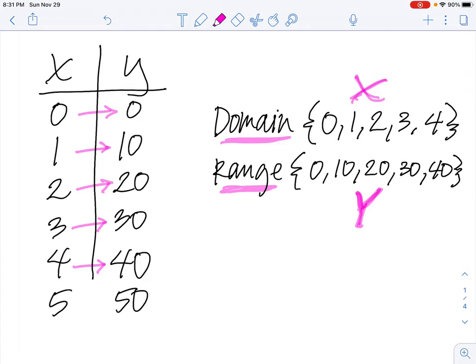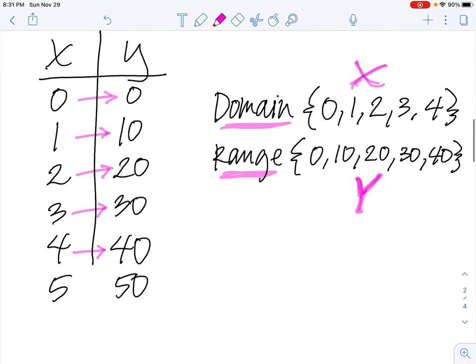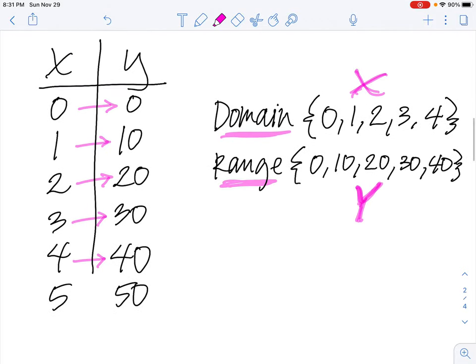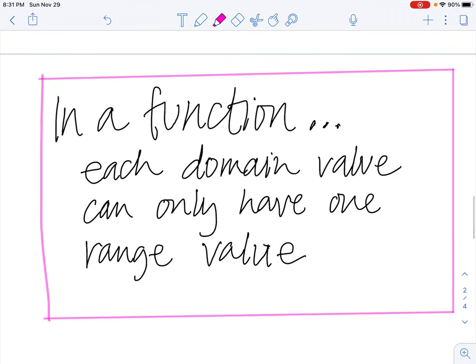The function is what changes the x and makes it into the y. Now there's an important rule behind functions as well that you'll need to note down. What you'll notice if you look at these values is that every x had one y value. 0 goes with 0, 1 goes with 10, 2 goes with 20, 3 goes with 30, and 4 goes with 40.